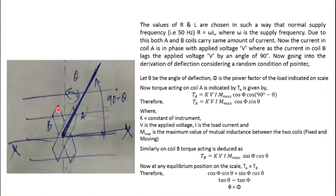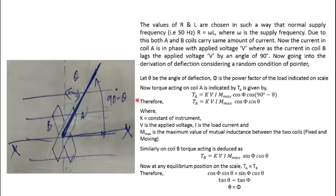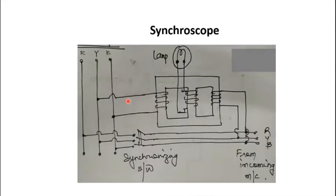Since cos(θ) equals cos(φ), and the cosine of the displacement angle between voltage and current is the power factor, θ equals φ. This is how the overall scale of this instrument is calibrated.